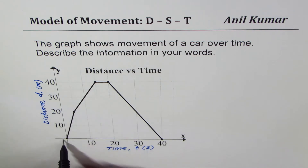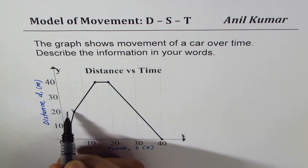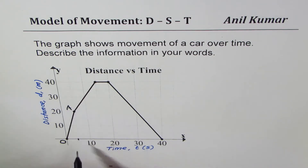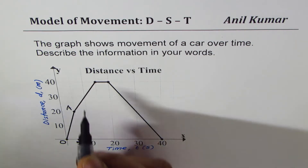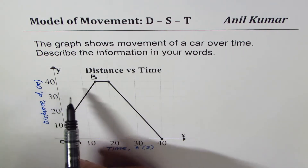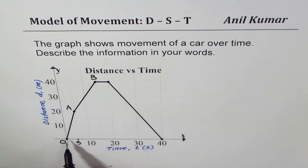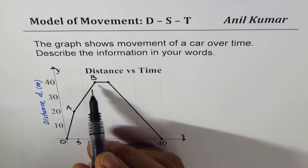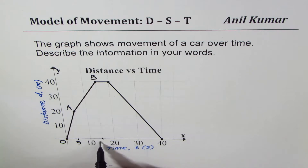Starting from the origin O, the car moves to point A which is 20 meters away, and this distance is covered in 5 seconds. Then from A the car moves to point B, which is 40 meters away from the original point — 20 meters further from A — and the total time taken so far is 15 seconds from the origin.